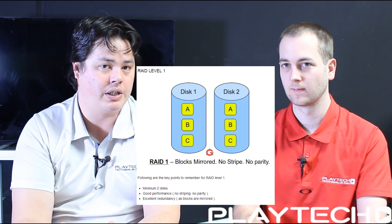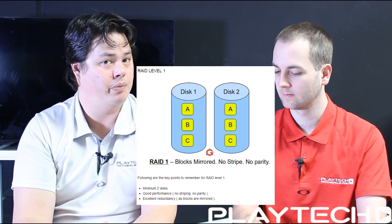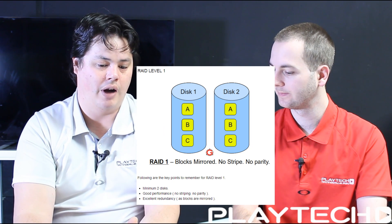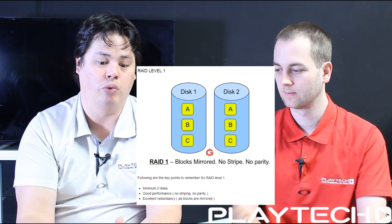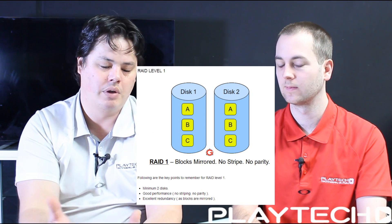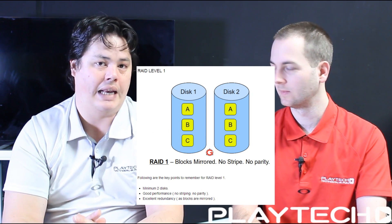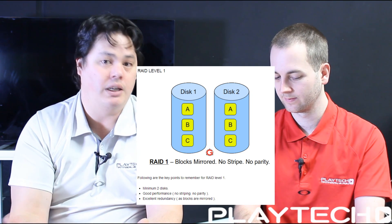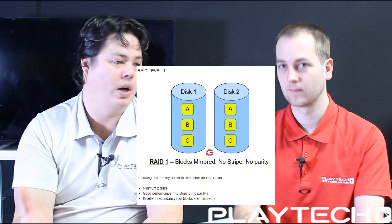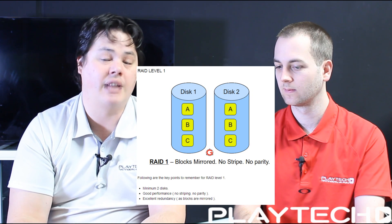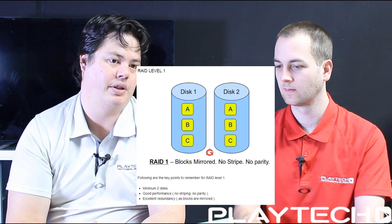RAID 1 is two hard drives working together to protect the data on both drives. They work simultaneously to write the data onto both drives, so should one drive die, it can be easily replaced and the good drive will rebuild the data to the new drive. You always have two copies at any one time, and this is the start of a fault-tolerant backup system — RAID 1.